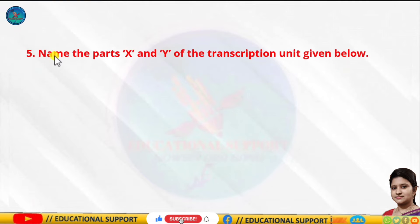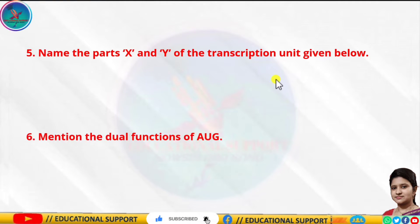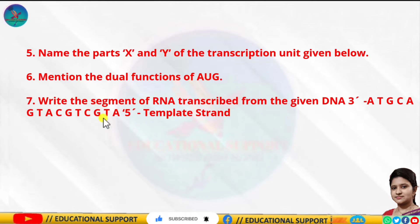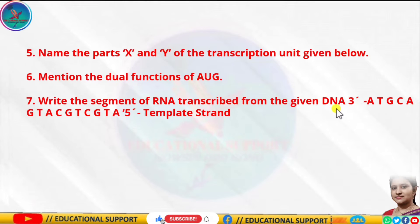Question number five: name the parts X and Y of the transcription unit given below. Question number six: mention the dual functions of AUG. Question number seven: write the segment of RNA transcribed from the given DNA's 3′ template strand: